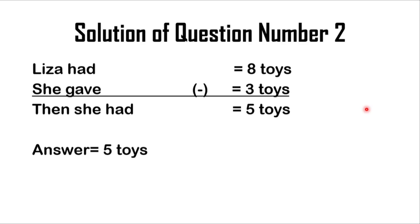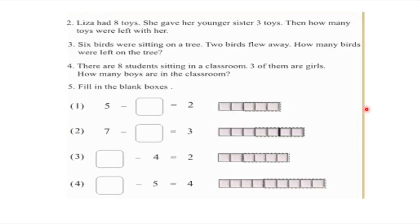Now we will try to solve question number 3. Let's read the question on page number 50. In question number 3 the author mentioned that 6 birds were sitting on a tree, 2 birds flew away — how many birds were left on the tree? First collect the data: 6 birds were sitting on a tree, then 2 birds flew away, so the number of birds will be decreased. You should also apply the concept of subtraction here.